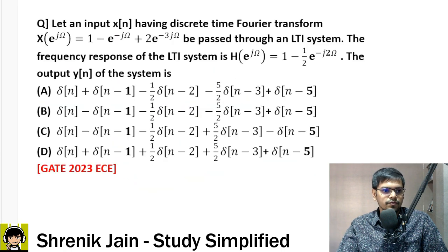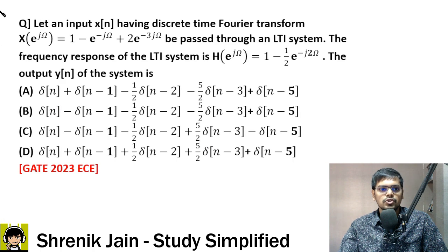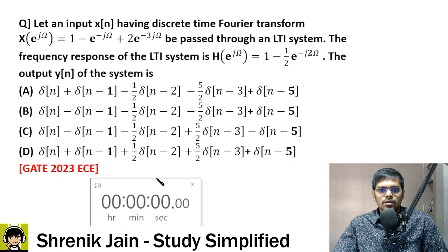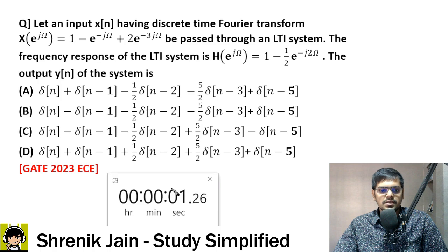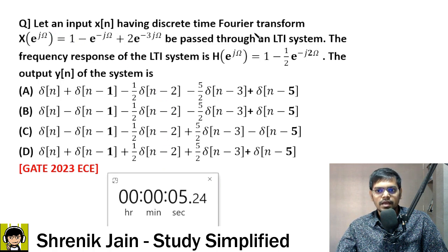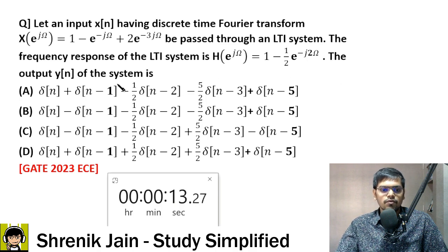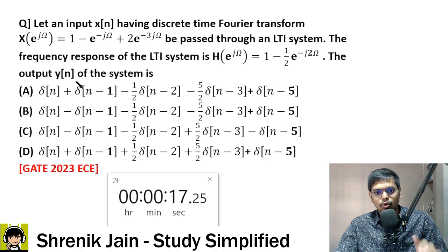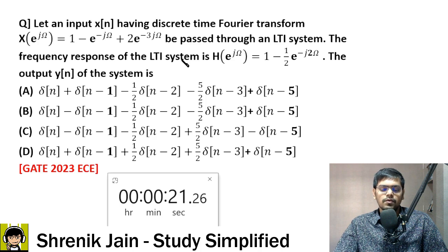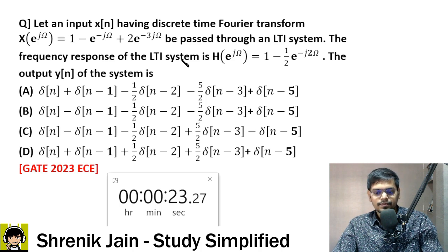Question number two is in front of the screen — an easy question. DTFT is given. Let an input x(n) have a DTFT (discrete time Fourier transform) as given. We pass it through an LTI system with frequency response H(e^jω). Can you find the output y(n) in the time domain? The given quantities are in the frequency domain.